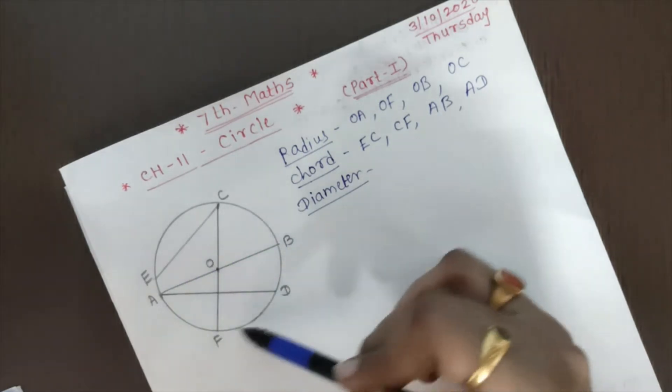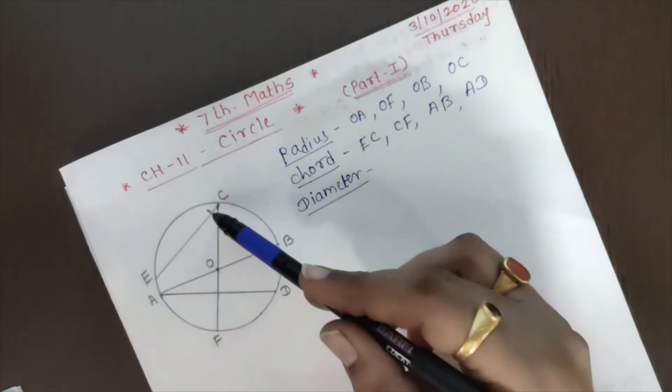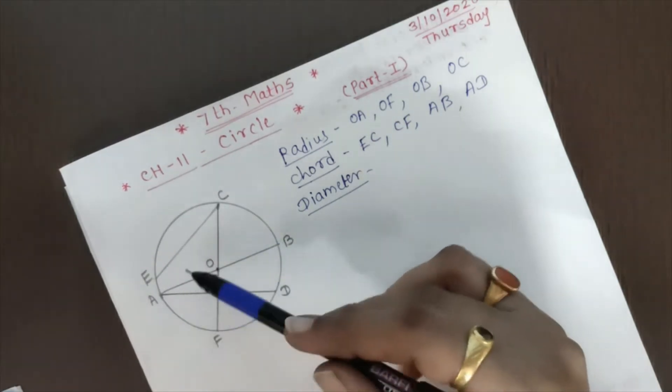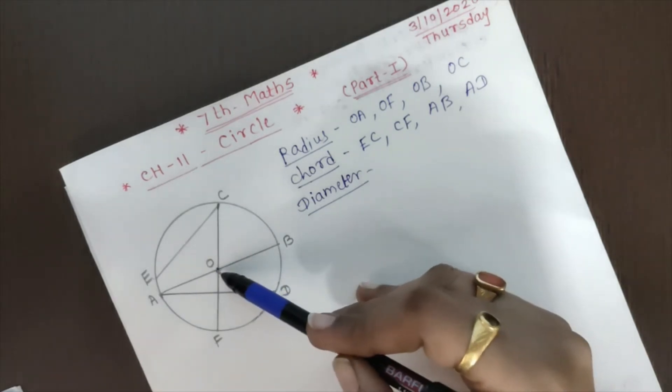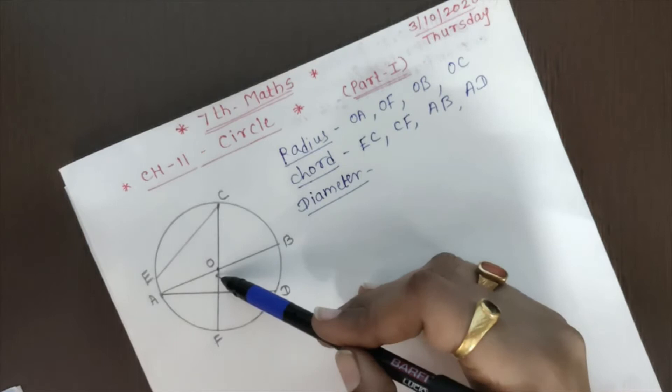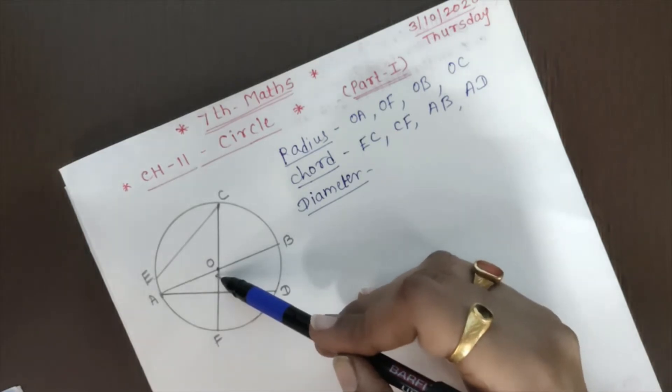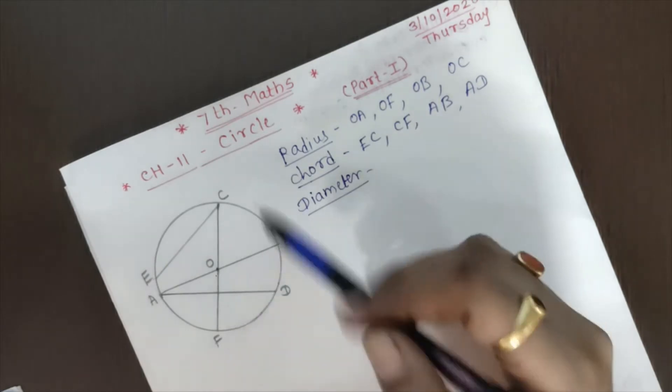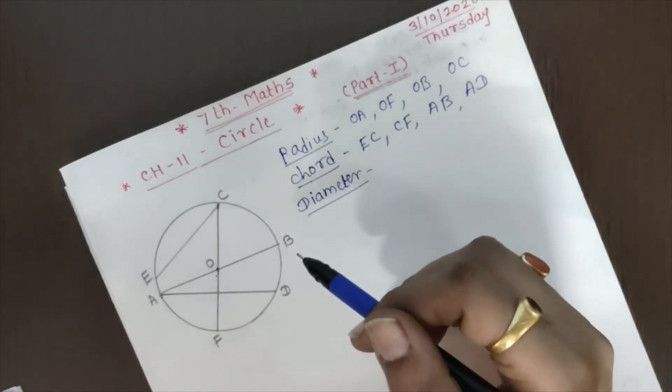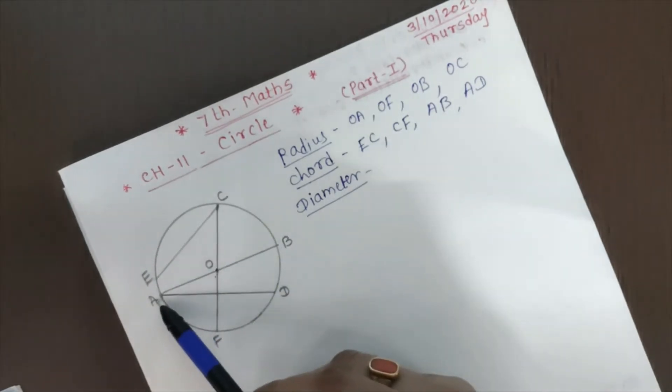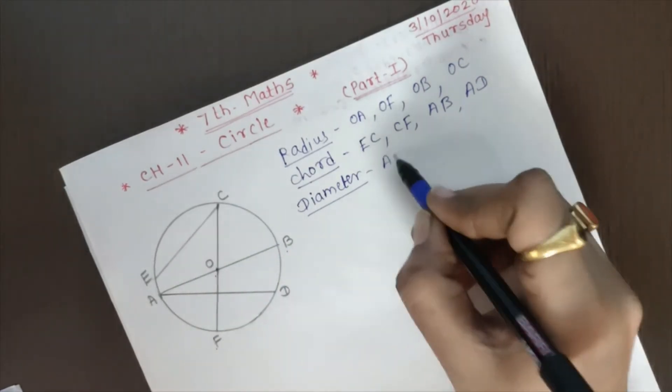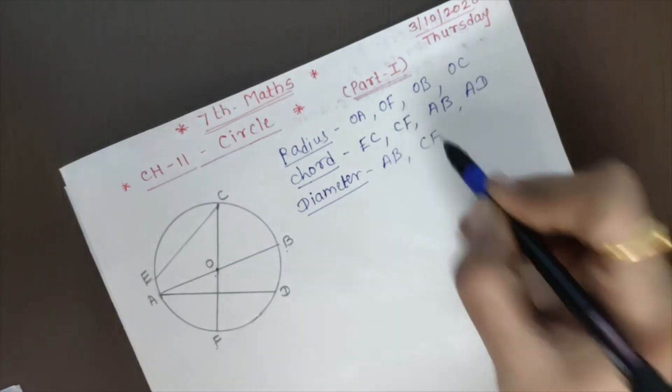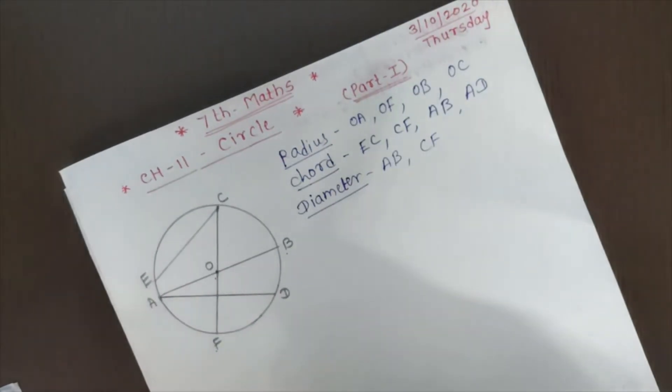The segment joins any two point from the circumference, but that segment passes through the center of the circle, is called the diameter of that circle. So in this figure, which are the diameters? So see, segment AB and CF, two diameters are given over here.